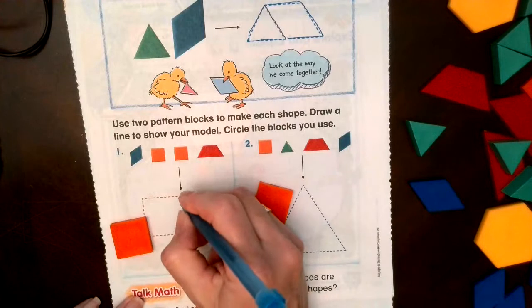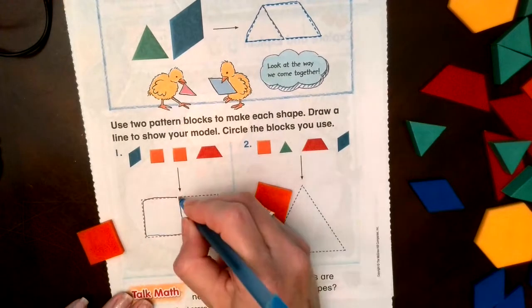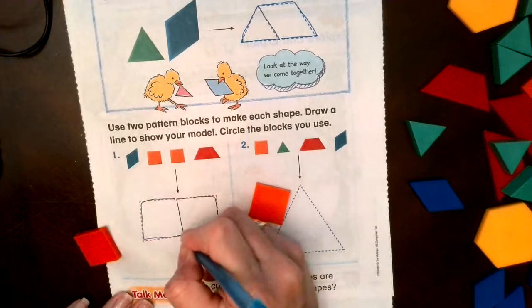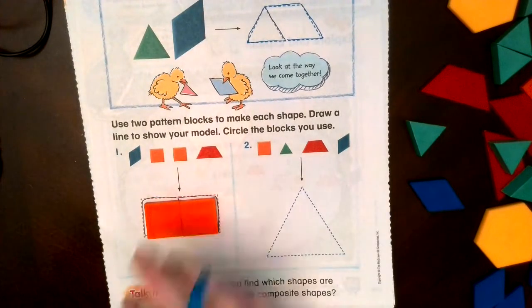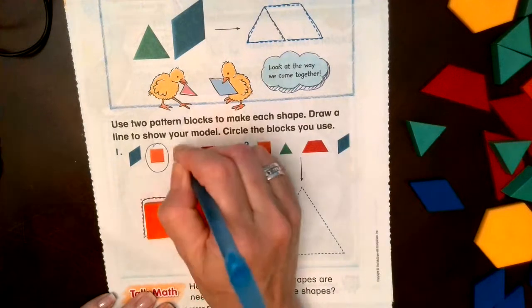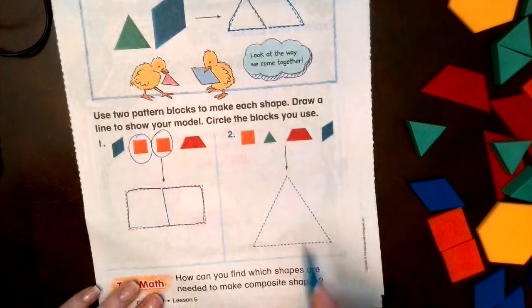So what we're going to do is draw the line down the middle to show that this is one square and this is two squares right next to each other touching makes a rectangle. So we used two squares to make the rectangle.